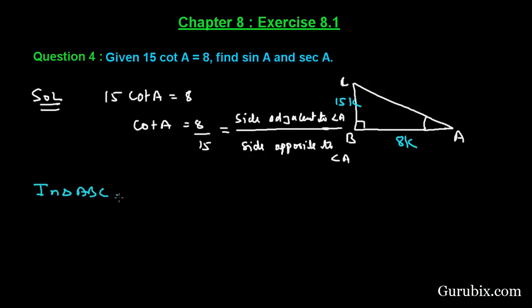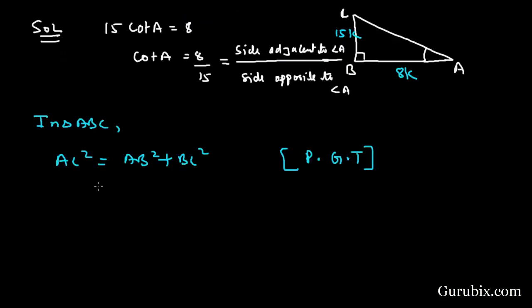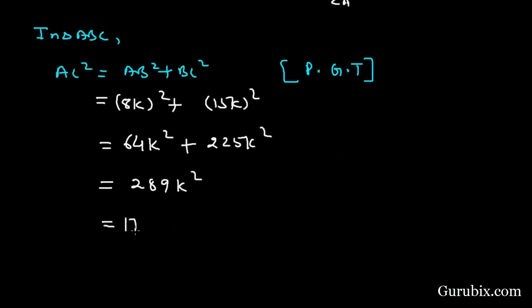Now in triangle ABC we shall find AC. Then AC square will be equals to AB square plus BC square because of Pythagoras theorem. So AB square will be 8k square, BC will be 15k square. Here we have 64k square plus 225k square, this equals 289k square.